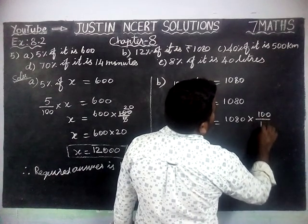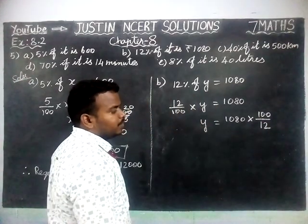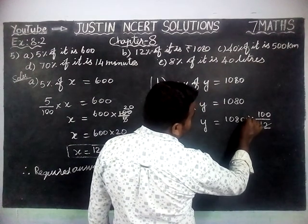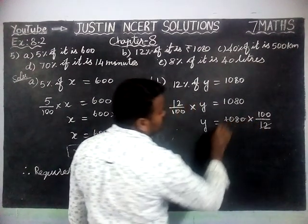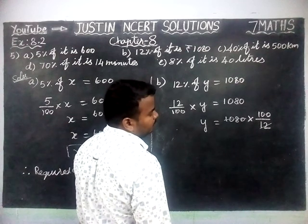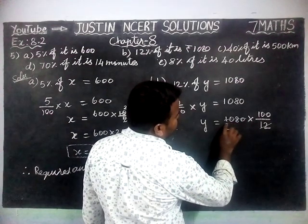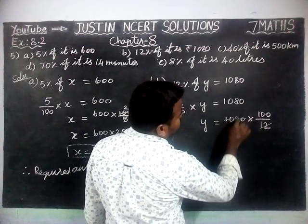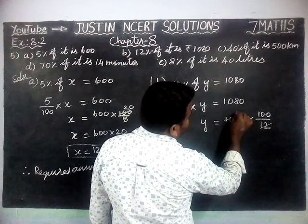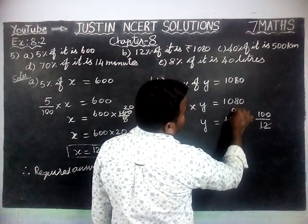100 divided by 12. We have to simplify. In 108, we have 9 twelves: 9 times 12 is 108.